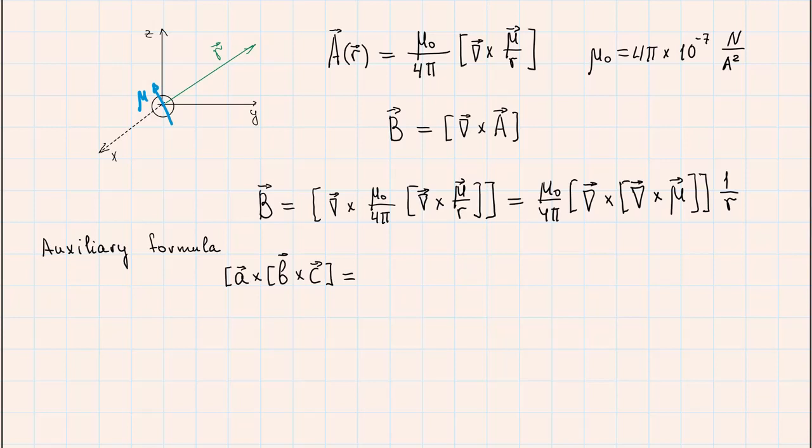This product can be handled using known formula from vector calculus. Such a cross product of three vectors A, B and C is equal to this expression. The explanation of this formula can be found for example by searching on internet typing a triple vector product.